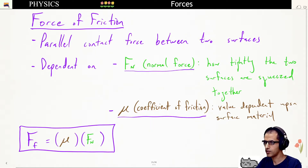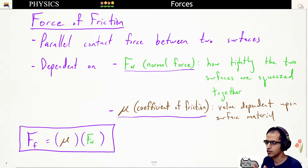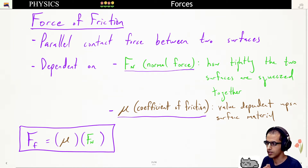Similar to the normal force, the force of friction is also a contact force between two surfaces, except it is parallel to those surfaces. It is the product of two variables: the normal force and the coefficient of friction. The normal force is how tightly two surfaces are squeezed into each other, and the coefficient of friction is a value that depends on the material of the surfaces.